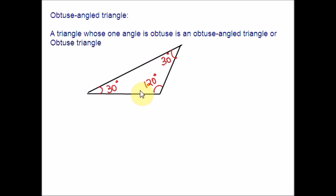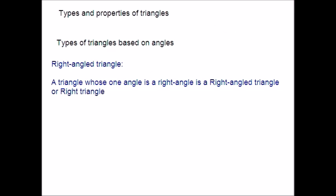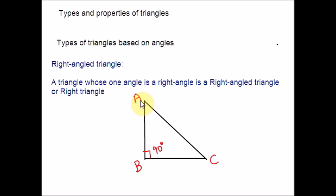The third type is right angle triangle. A triangle whose one angle is a right angle is called a right angle triangle or right triangle. The side AB is perfectly perpendicular to BC. If you divide a straight angle into equal halves, you get 90 degrees. All three angles cannot be equal to 90 degrees, because their sum would exceed 180. So only one of the angles in that triangle will be equal to 90 degrees.